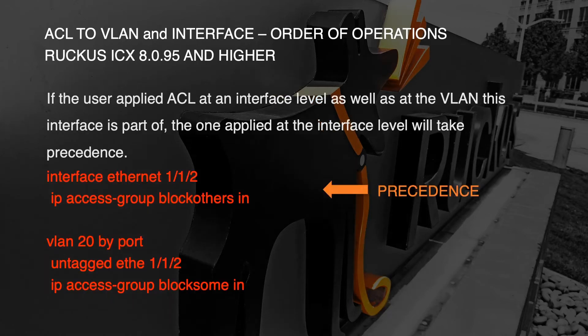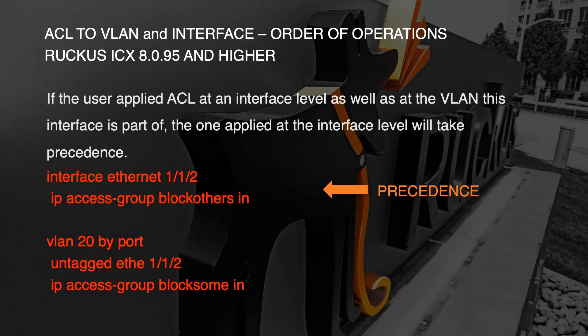So for the first rule: if the ACL is applied at the interface level as well as the VLAN that the interface is part of, then the one applied at the interface level takes precedence. Here you can see that on the physical interface on 1/1/2, we've applied an ACL called 'block others in' — so it's inbound. And on the VLAN level, not the VE in 8095, we've applied a different ACL called 'block some in'. Because they're both applied, the physical interface takes precedence — assuming there are actually some statements in that ACL.